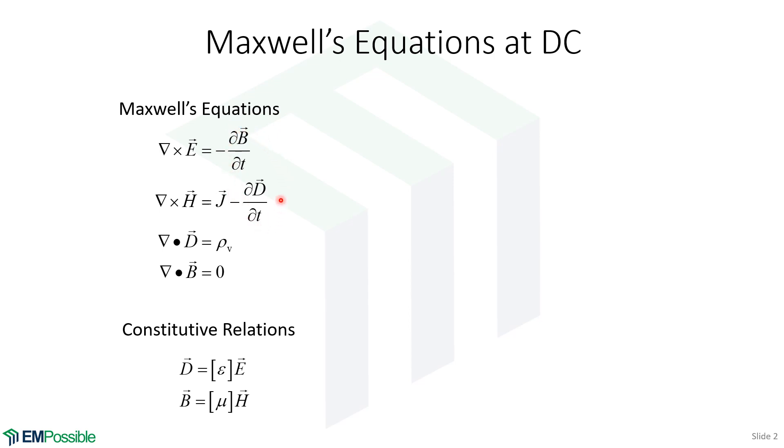which is calculating the change of B and the change of D with respect to time, those have to be zero. So to describe electrostatics, we need to cross those off.